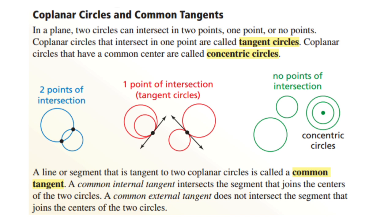Now we're talking about coplanar circles and common tangents. In a plane, two circles can intersect in two points, one point, or no points. Coplanar circles that intersect in one point are called tangent circles. Coplanar circles that have a common center are called concentric circles. A line or segment tangent to two coplanar circles is called a common tangent. A common internal tangent intersects the segment joining the centers; a common external tangent does not.